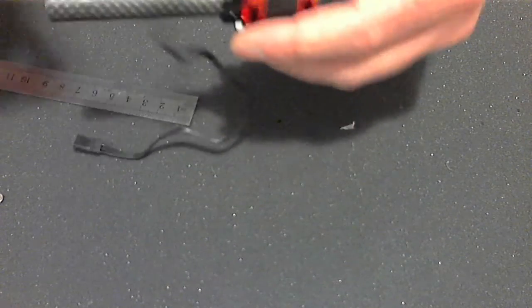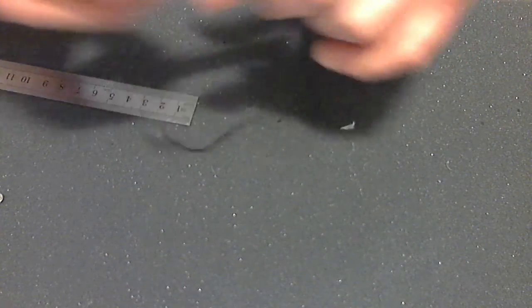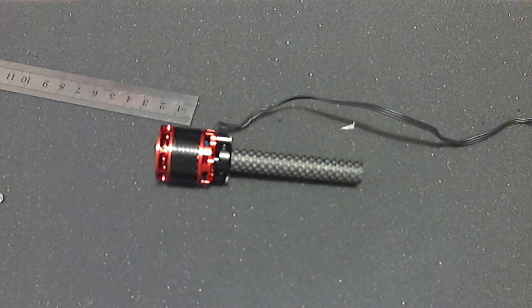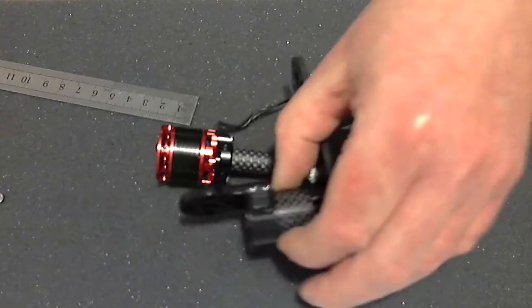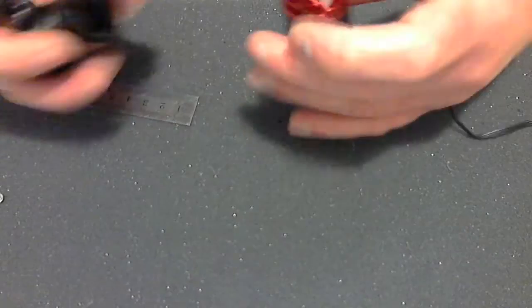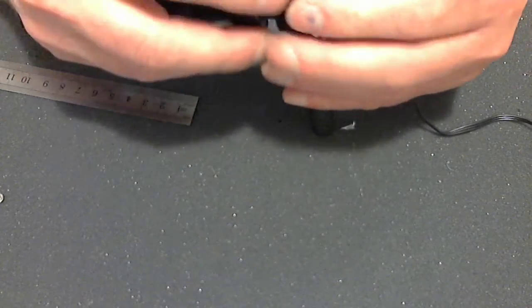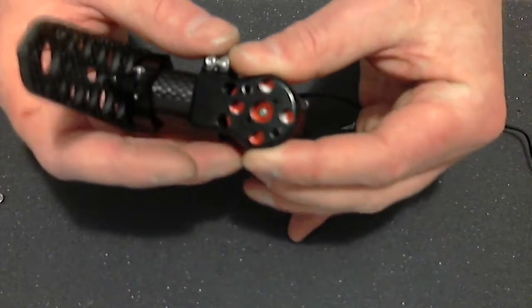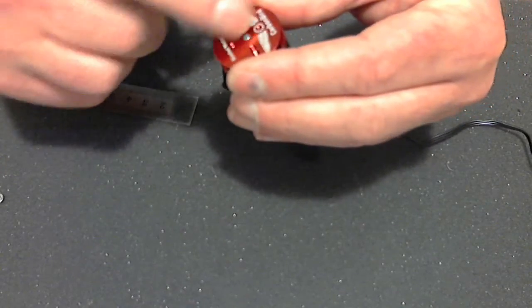There we go, let's wipe off any excess loctite. So there's my motor on the carbon boom. Now I can bring back in my center section, and that screws very happily onto the back here.